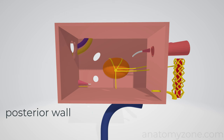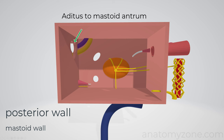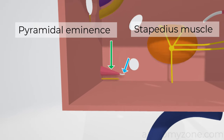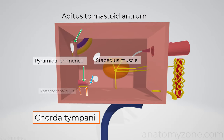The posterior wall is also known as the mastoid wall, and inferiorly there's a bit of bone separating the middle ear cleft from the mastoid air cells. Superiorly is the aditus to the mastoid antrum, which is continuous with the epitympanic recess. The pyramidal eminence is a small conical projection in front of the vertical segment of the facial nerve. It contains the stapedius muscle, and has a small opening through which the tendon passes into the middle ear. Also within the posterior wall, at the angle between the posterior and lateral walls, is the opening for the chorda tympani — the posterior canaliculus — which branches off from the mastoid segment of the facial nerve, cranial nerve seven.